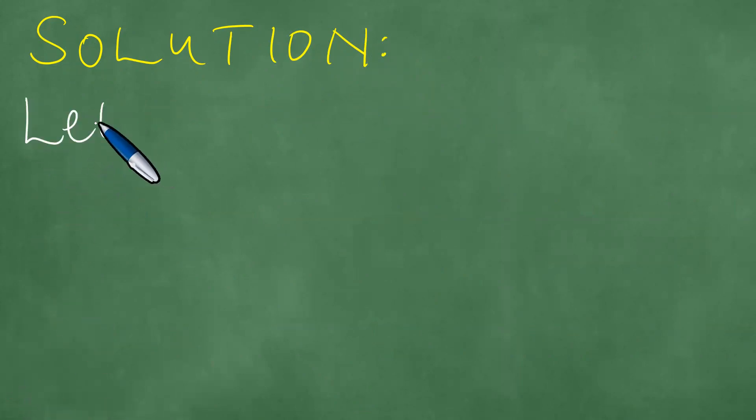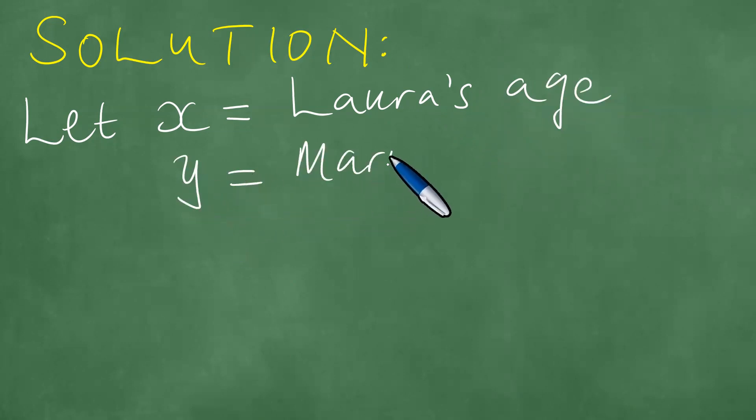To present a solution to this problem, we first let x be Laura's age, and y be Mary's age.